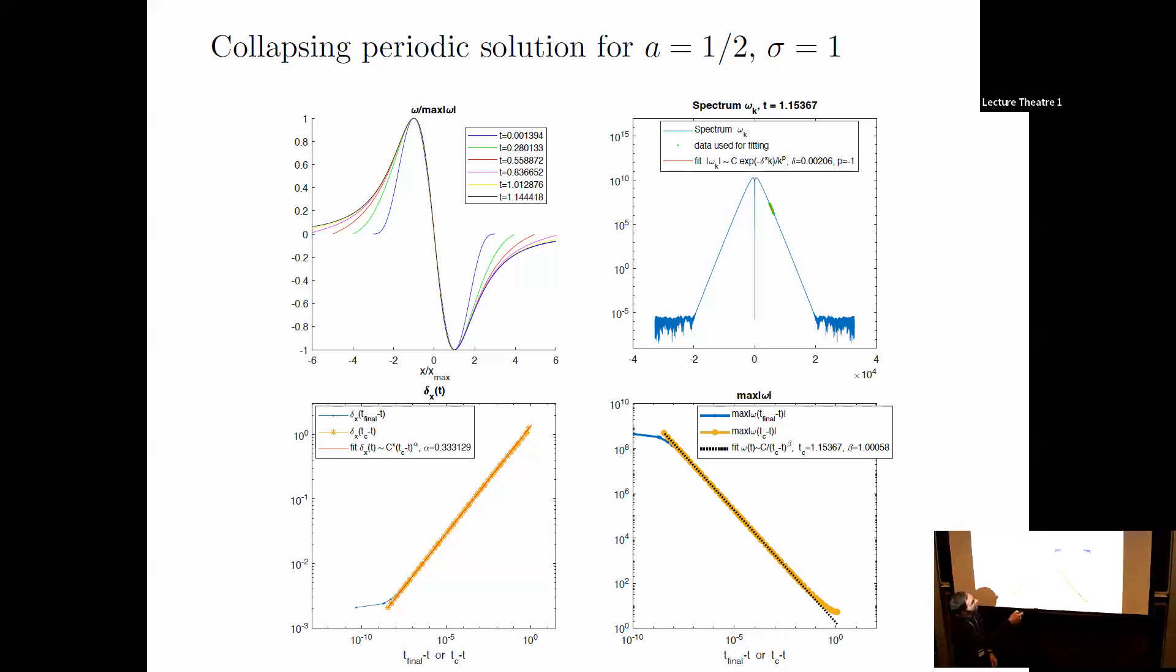We can read off the power of the singularity from the decay of the Fourier spectrum. P equals minus one means these are double poles in the complex plane moving toward the real line. It's not hard to relate the distance of the singularity from the real line, delta, to the similarity exponent alpha. Alpha is the slope of a plot of delta versus T_c minus T in a log-log plot. We fit to that slope and get alpha very close to one-third, to four digits. Similarly, we fit for beta on a log-log plot of max omega and get beta equals one. So this is a one-third, one similarity exponent. We have an analytical prediction of that.